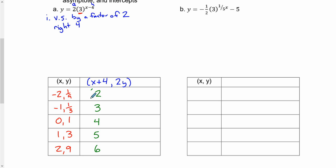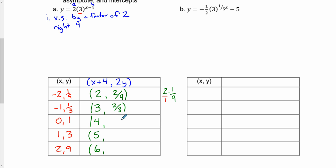Now multiplying all y-values by 2. For the harder ones: 2 multiplied by 1 ninth is 2 ninths. 2 multiplied by 1 third is two-thirds. Then the straightforward ones: 2 multiplied by 1 is 2, 2 multiplied by 3 is 6, and 2 multiplied by 9 is 18. So graphing the last point at y equals 18 is not going to be easy given our grid.